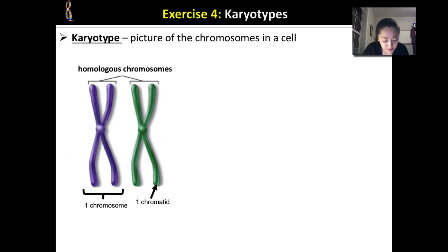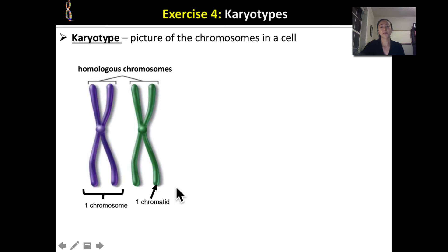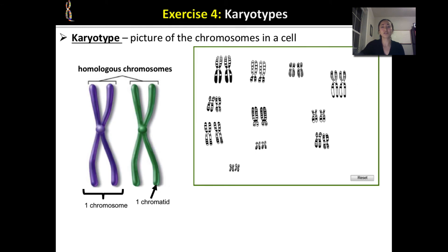A karyotype is a picture of chromosomes in a cell. Homologous chromosomes are chromosomes that are similar to each other — you get one from each parent. Here I have a pair of homologous chromosomes, each duplicated. We can pair chromosomes with their homologous partner because they look similar: the banding pattern is the same, showing where certain genes are located, and the centromere location is also the same on each homologous chromosome.